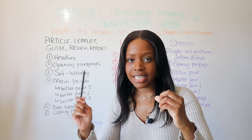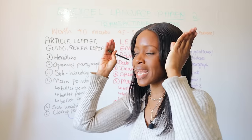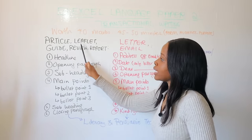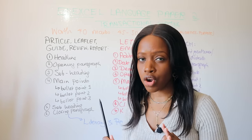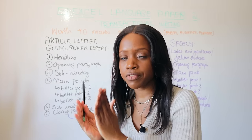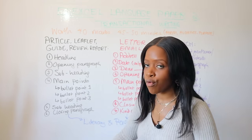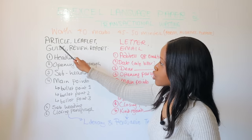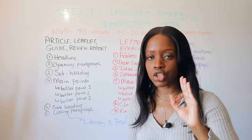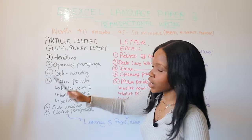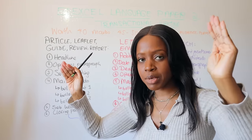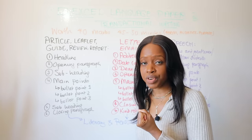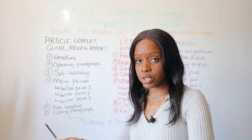The first set of forms — article, leaflet, guide, review, or report — you can use exactly the same layout for all of these. It's a six-step form. Start off with a title or headline, right at the centre, keeping it to five or maximum six words. You can look at the keywords in the question and turn them into a rhetorical question, which immediately informs your reader what the piece is about. Irrespective of what comes up, start with your headline.